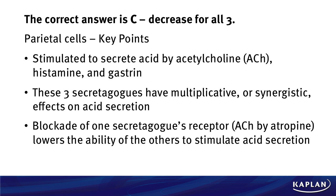These secretagogues have multiplicative or synergistic effects on acid secretion, meaning that if one stimulates acid secretion and then another comes by to also stimulate it, their effects actually increase because both are present rather than just one. If we block one of them — for instance, in this question we give atropine, which blocks acetylcholine from binding to its muscarinic receptor on parietal cells — it's going to lower the ability of the other compounds, gastrin and histamine, to stimulate acid secretion. That's part of the synergistic effect. So with all three going down, that's why we have choice C.